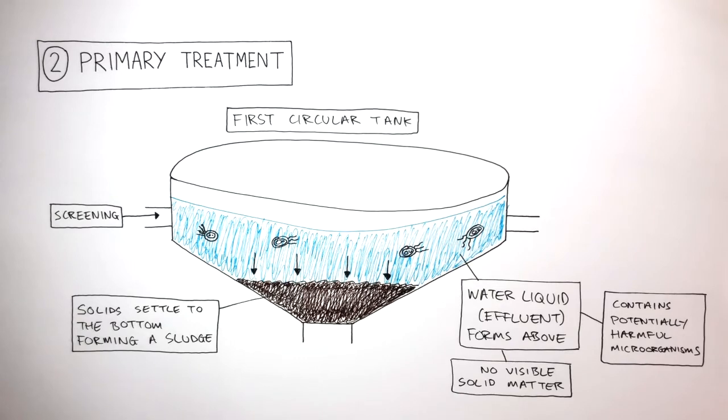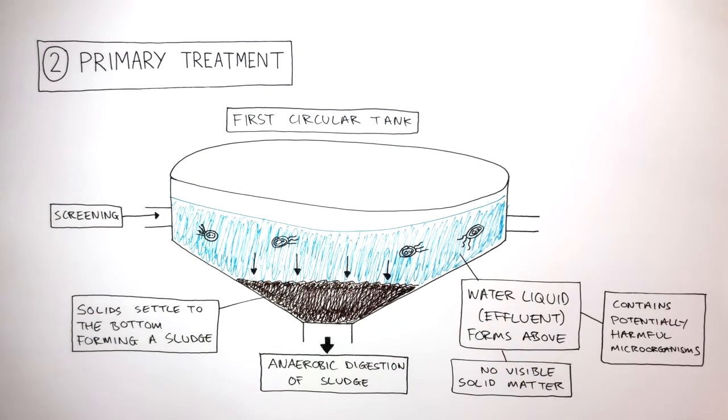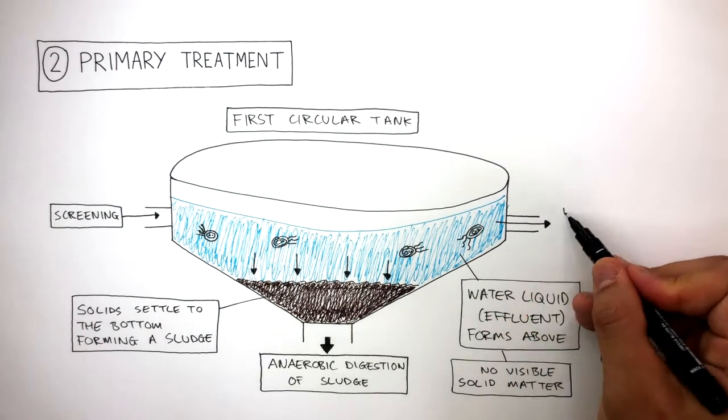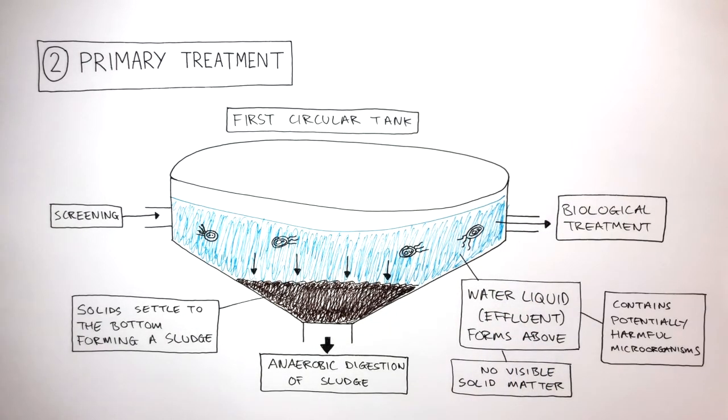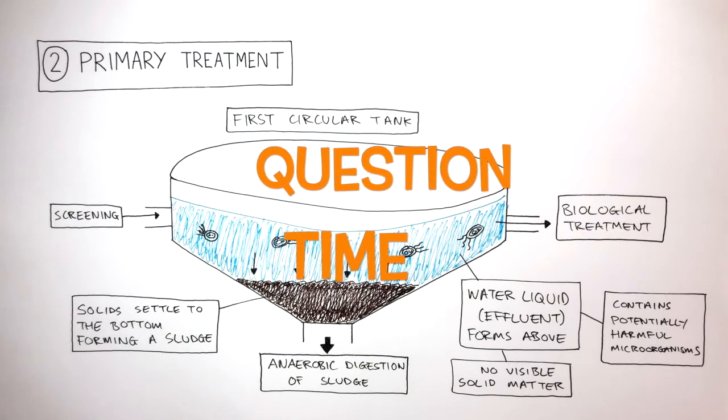This sludge flows to a separate treatment tank where anaerobic digestion of sludge takes place, which you can learn about in a separate video. The effluent then flows into the next tank where biological treatment takes place. It's question time! Attempt these questions to check your understanding.